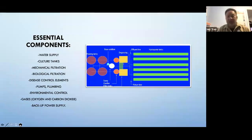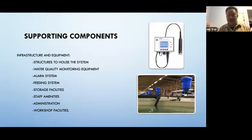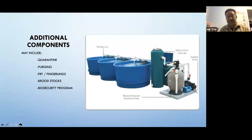Essential components include: water supply, culture tank, mechanical filtration, biological filtration, disease control, pumps and plumbing, environmental control, gases, and backup power supply. Nice-to-haves include infrastructure, water quality monitoring equipment, alarm systems, feed systems, storage, staff amenities, administrative offices, and shop/repair workspace. Additional components to consider: quarantine for incoming fish, a purging facility before market, fry or fingerling production or brood stock management — and biosecurity program, which should really be in the must-have category.